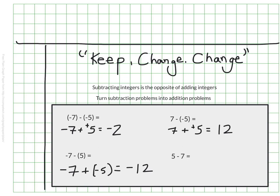And we can even use it with our last example. We could keep the 5, change it to an addition problem, and turn our second integer into a negative. So we would have 5 plus negative 7. Using our adding rules, we know our answer would be negative 2.